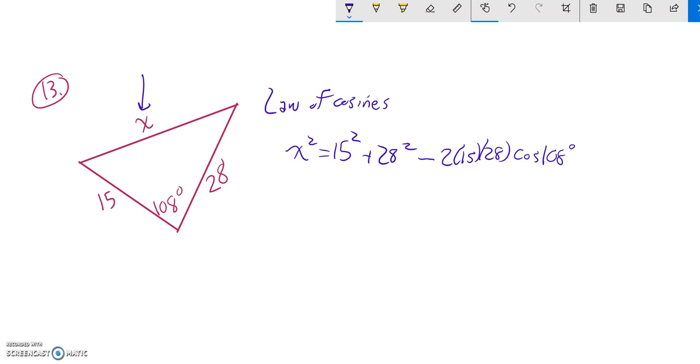So now x squared equals this. Again, it looks like Pythagorean theorem with a little bit of correction formula. And now I'm just going to start calculating some things. 15 squared is 225, 28 squared is 784, 2 times 15 times 28 is like 840.